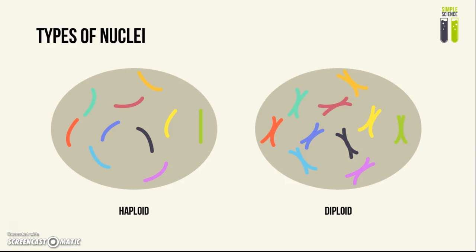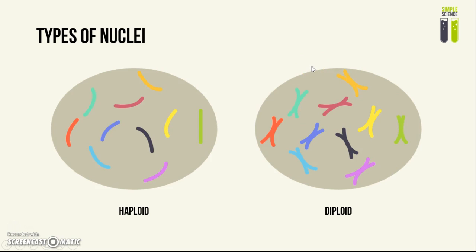There are two types of nuclei that you need to be aware of. The first type is a haploid nucleus, and the second type is a diploid nucleus. In a haploid nucleus, there is a single set of chromosomes that are all unpaired, meaning each type of chromosome exists as a lone chromosome. You can see this clearly here when you contrast with the diploid nucleus, which contains two sets of chromosomes, and each type of chromosome is paired up.